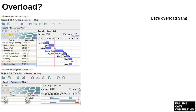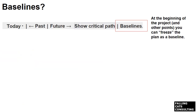A new task has been added called 'Overload SAM', scheduled for one day starting on the 5th of February and assigned to SAM. There's no indication of a problem on the Gantt chart, but the resource chart shows SAM in red on the 5th, meaning he's been assigned to do two days' work in one day — that's not going to happen. At the top right of the Gantt chart is a baselines option. At the beginning of the project and at other points, you can freeze the plan as a baseline, which lets you compare the real timing with your initial plan. The utility of this is debatable, but it's quite simple.